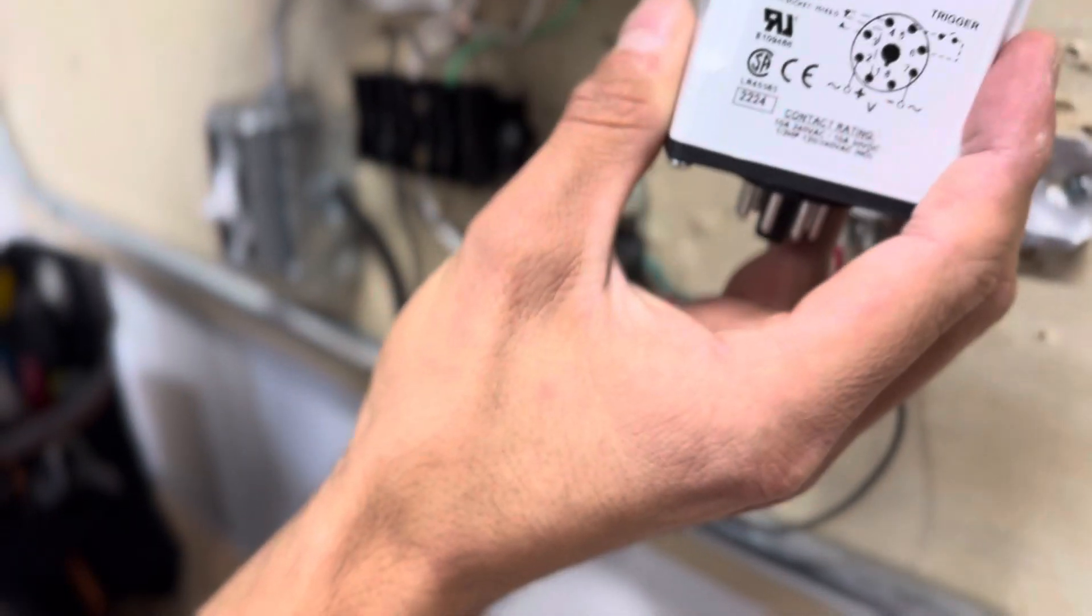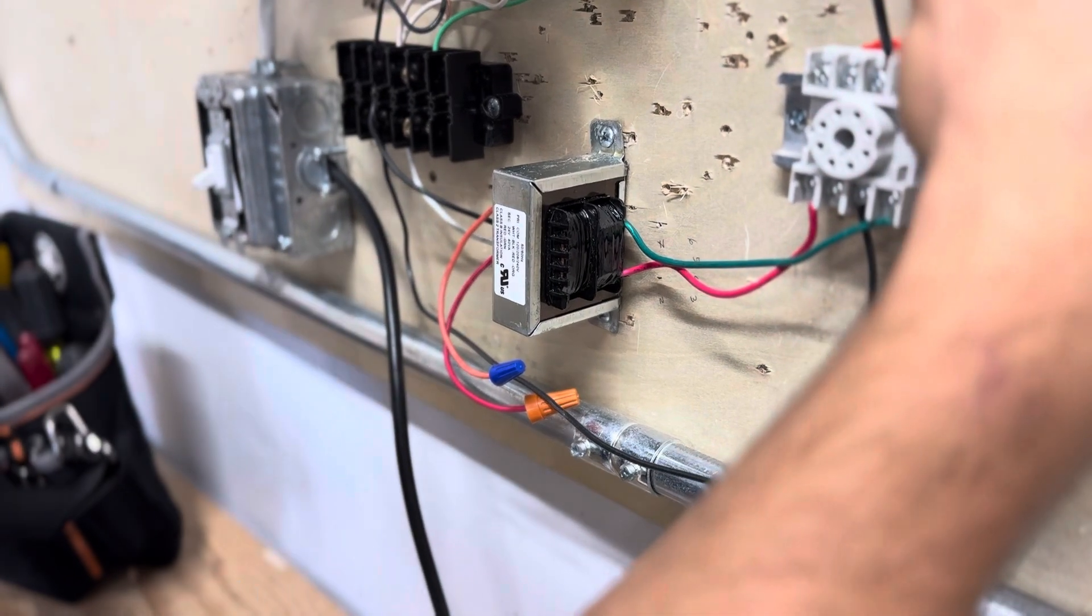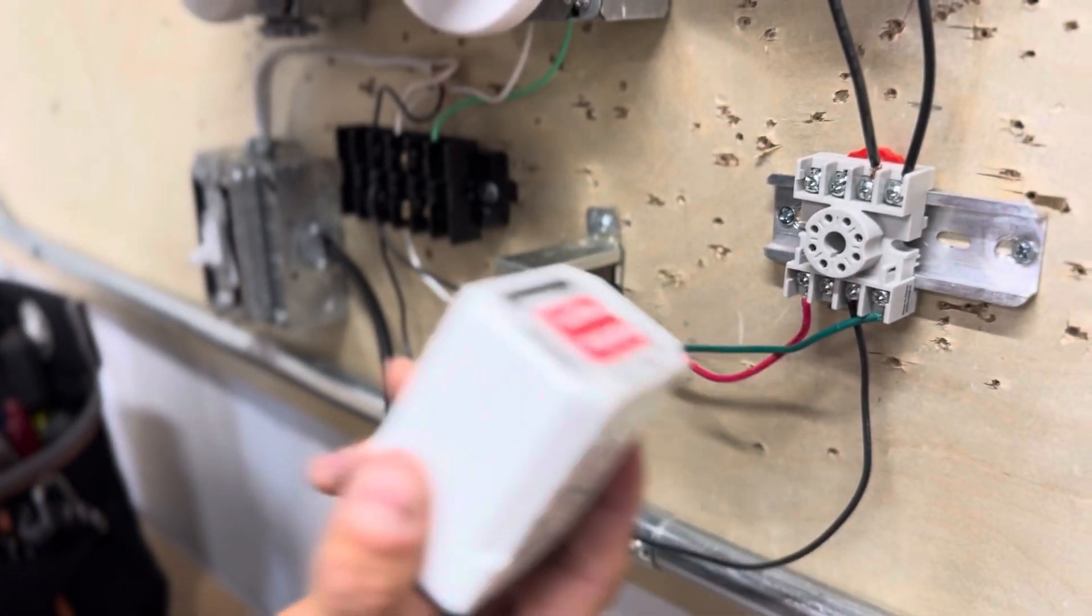Normally open, your solid state relay. Now this is your normally open so your lamp will be off until it becomes normally closed or in other words energized by the solid state relay.